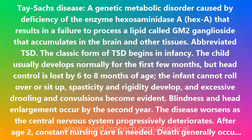With juvenile TSD and adult TSD, the person has somewhat more hexosaminidase and hence a later onset of clinical disease than with infantile TSD. All known forms of TSD are inherited in an autosomal recessive manner and are due to mutation of the gene for the alpha-subunit of hexosaminidase A, located on chromosome 15q23-15q24.